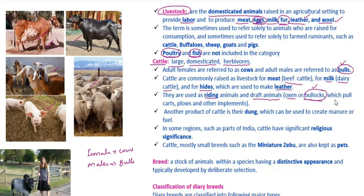Bullocks are used for the pulling of carts and plows. We use cots — cots means chakral, that is castrated males used for draft purposes.